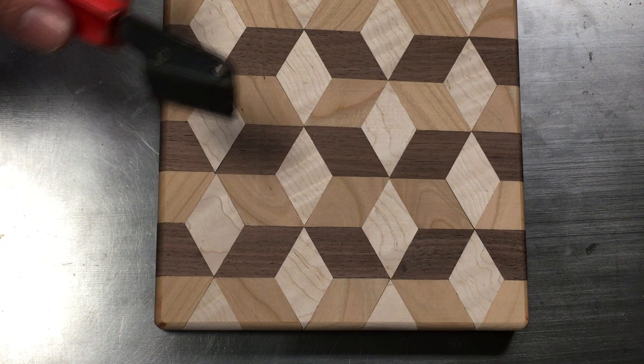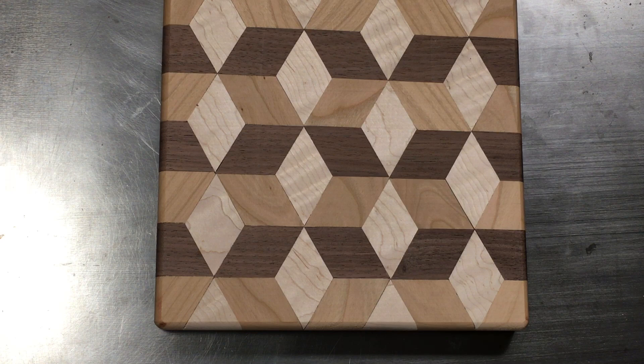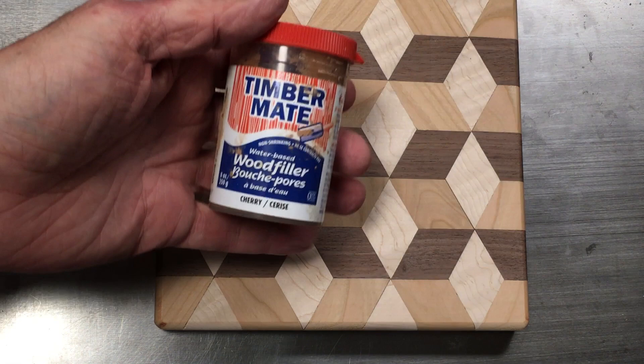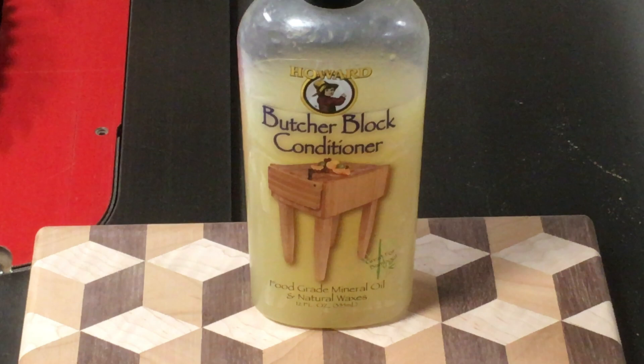Despite all your efforts at precision, if you're like me there will be some micro-gaps here and there. Here's one that is just big enough to put a razor blade in. They may not seem very noticeable, but they will still be improved by applying some wood filler with a color close to one of the woods bordering the gap. I use this Timbermate water-based filler, which has maple, cherry, and walnut colors, and is really easy to use.